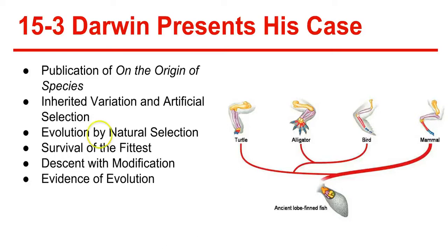Next, descent with modification. Darwin proposed that over time, natural selection produces organisms that have different structures, establish different niches, or occupy different habitats. As a result, species today look different from their ancestors, and each living species has descended with changes from other species over time. This principle is referred to as descent with modification, and it implies that all living organisms are related to one another through an ancient ancestor.